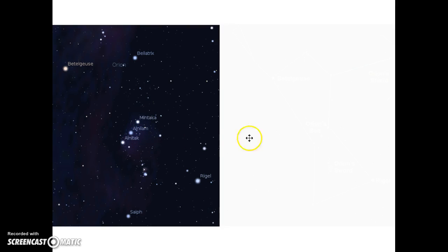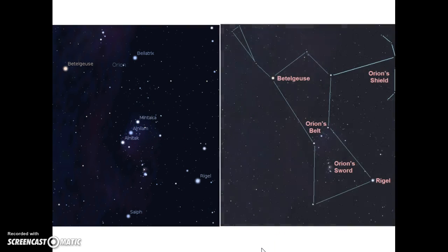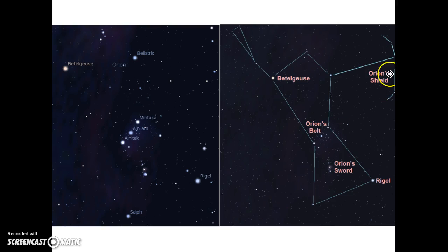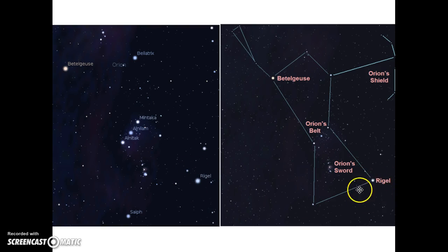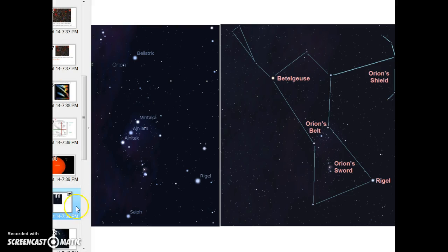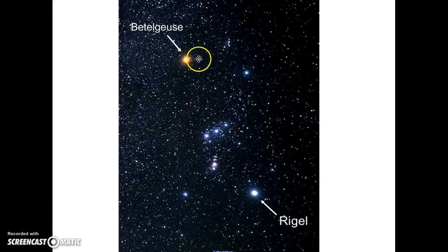Let's take a look at the constellation Orion. It's fairly easy to find, especially in wintertime, by looking for the three stars that form Orion's belt. Orion is the hunter, holding his shield in front of him. I want to look at one star called Betelgeuse, which is part of Orion's shoulder, and then Rigel, which is one of Orion's feet. In an actual photograph, you'll notice Betelgeuse has a reddish-orange color, while Rigel looks more bluish or whitish.